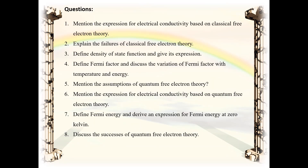The questions from these discussions: (1) Mention the expression for electrical conductivity based on classical free electron theory. (2) Explain the failures of classical free electron theory. (3) Define density of state function and give its expression. (4) Define Fermi factor and discuss its variation with temperature and energy. (5) Mention the assumptions of quantum free electron theory. (6) Mention the expression for electrical conductivity based on quantum free electron theory. (7) Define Fermi energy and derive an expression for Fermi energy at zero Kelvin. (8) Discuss the successes of quantum free electron theory. Thank you.